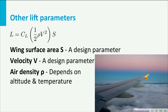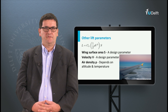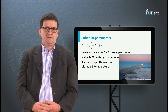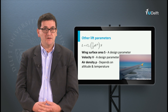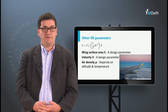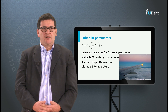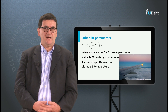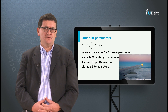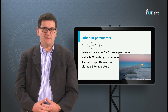Returning to the formula for lift, the other parameters in the formula are the wing surface area and the velocity or airspeed. Both are typical design parameters. During the design of an aircraft you need to optimize these values with many others in order to obtain the best ratios between performance, weight, and costs. The last variable in the equation is the air density, which depends on altitude and temperature. As a designer, by choosing a flying altitude you can have some, although limited, influence on this parameter as well.